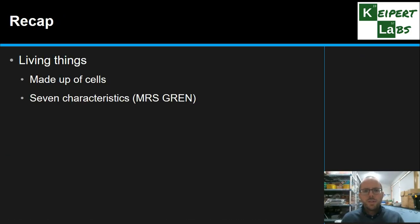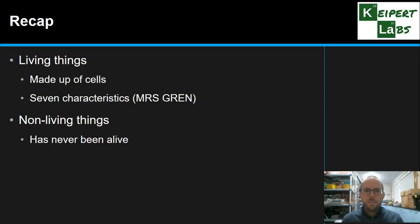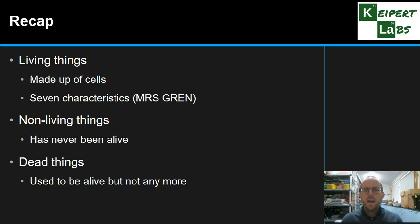So to recap: living things are made up of cells and share seven common characteristics called Mrs. Gren, which we will unpack in the next video. Non-living things have never been alive, are not made up of cells, are material objects, and lack one or more of those seven features of living things. And dead things are made up of cells — they used to be alive but they are not anymore. Thanks very much for watching. Bye for now.